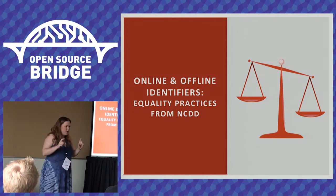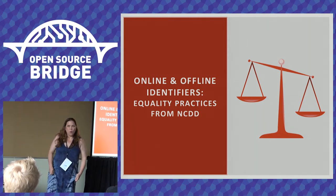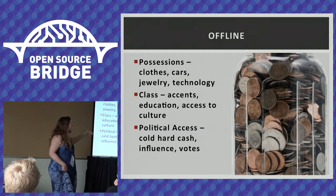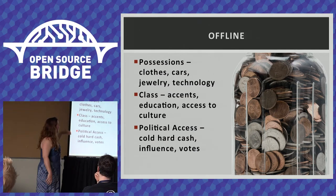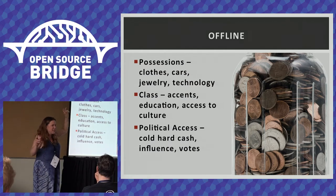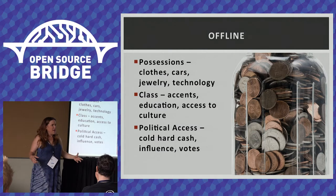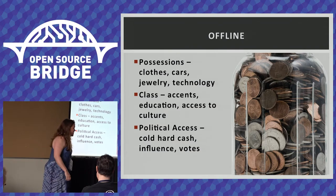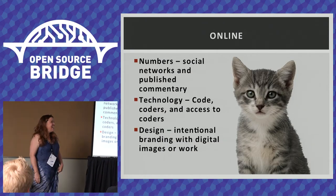One of the things NCDD does is be very scrupulous about setting the terrain in which you have the conversation. We should think about that when we start designing those little input boxes. What is your name? Who are you? And given what online is — why do we have the same boxes that the government always asks us for? When we talk about offline identifiers, we're talking about things like possessions, accents, education, cultural identifiers, political access — whether people can talk to politicians, run for office, access lobbyists. Online, it's different.